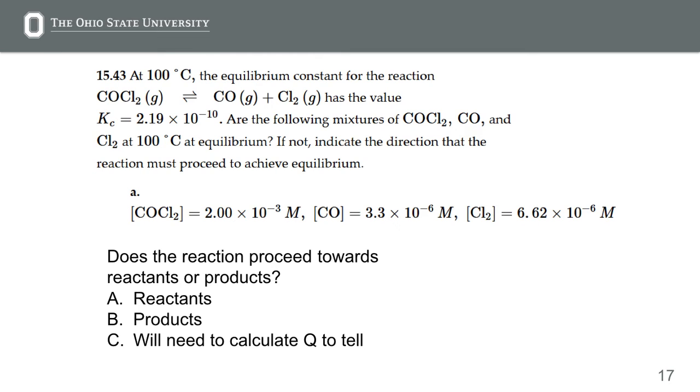I am on the chapter 15 notes, slide 17, where we're looking at an equilibrium of COCl2 in equilibrium with CO, carbon monoxide, and chlorine gas Cl2. And we're given the value of the equilibrium constant, 2.19 times 10 to the minus 10. This was a multi-step problem, which I've just now made into one step. Is the following mixture of COCl2, CO, and Cl2 at this temperature at equilibrium? And if not, indicate the direction that the reaction must proceed.